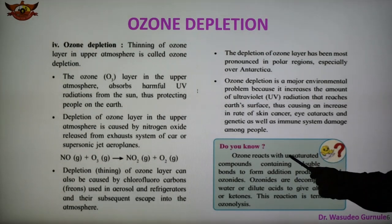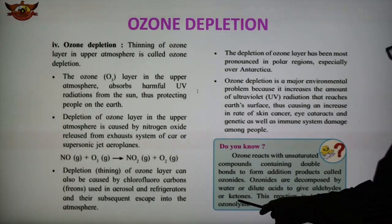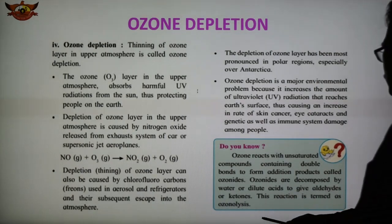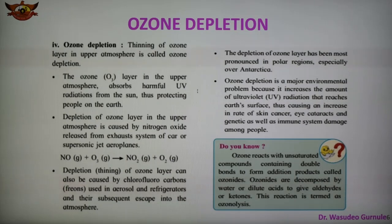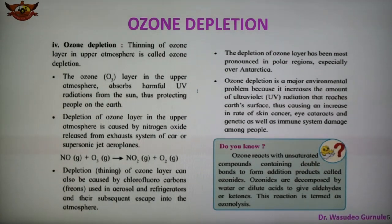Ozone reacts with unsaturated compounds containing a double bond to form an addition product known as ozonide. Ozonides are decomposed by water or dilute acid, giving aldehyde or ketone. This reaction is known as ozonolysis. So ozonolysis is the reaction where ozone reacts with an unsaturated compound forming an ozonide, which is an important reaction.